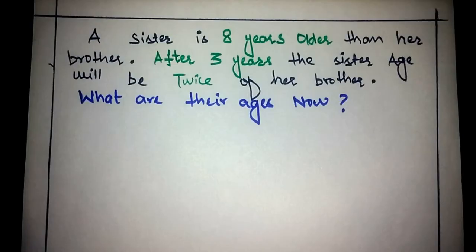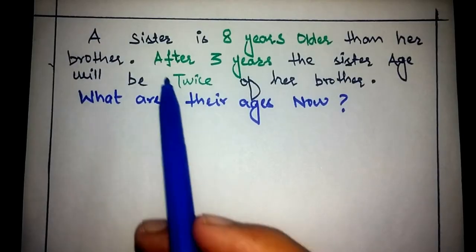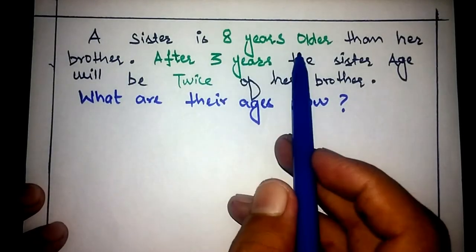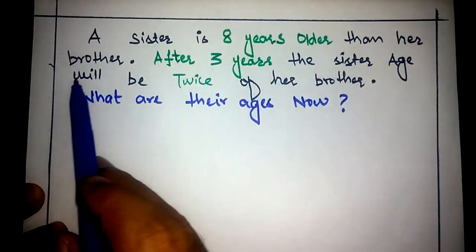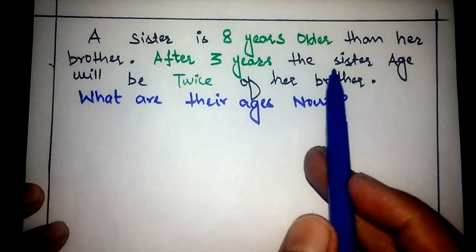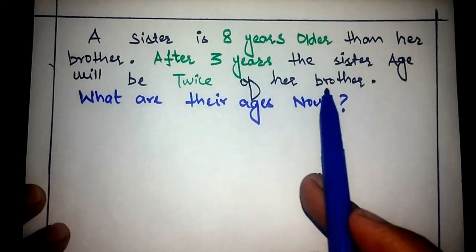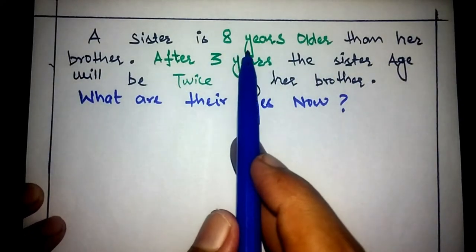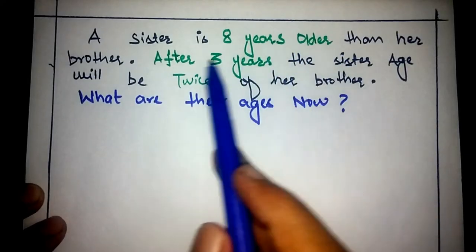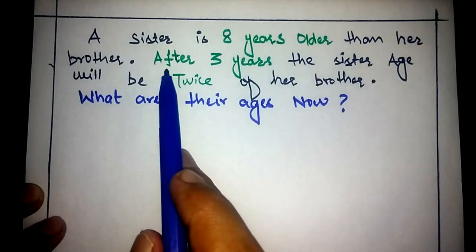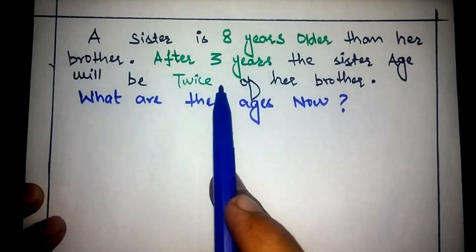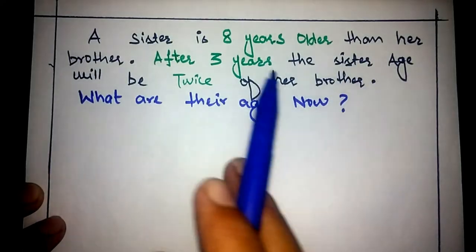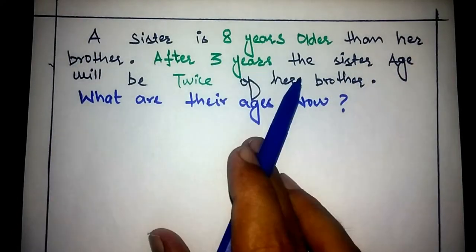In this video we will discuss two age problems. The first age problem is: a sister is eight years older than her brother; after three years, the sister's age will be twice her brother's age. The important points are: eight years older, after three years, and twice.